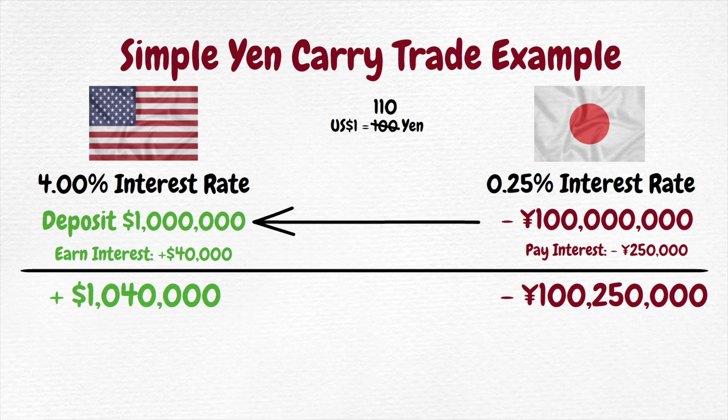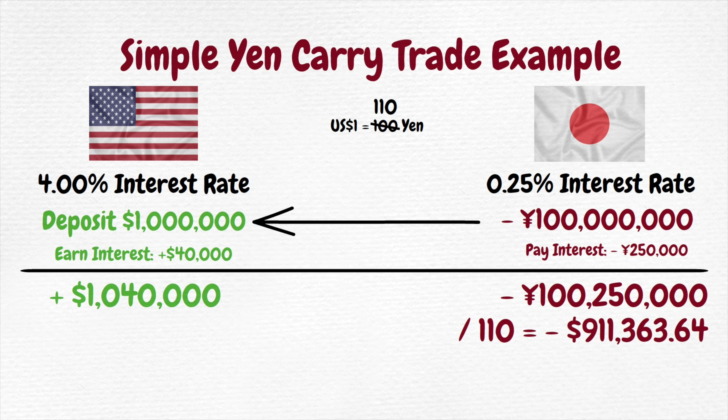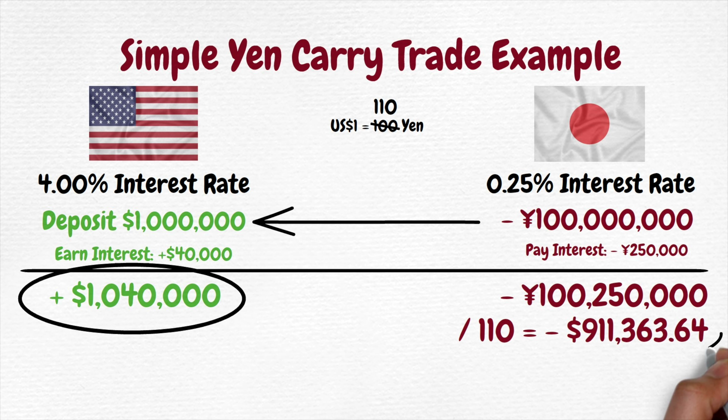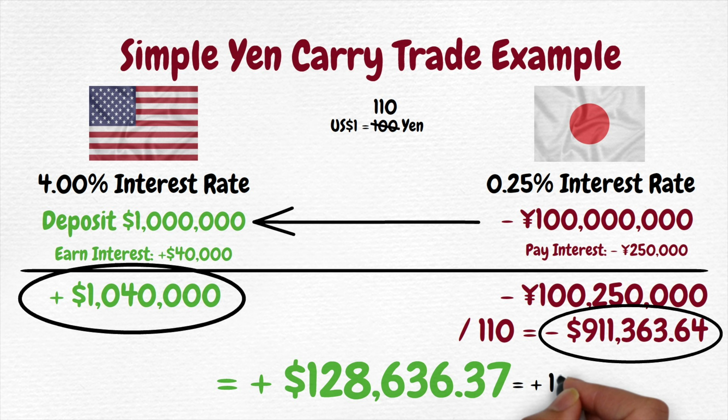At the new exchange rate of 110 yen per US dollar, we take 100,250,000 yen and divide that by 110 to get $911,363.64. So if we take what we have and subtract what we owe, we get $128,000 and change — a gain of 12.9%, which looks pretty damn impressive. So remember, it's these two ingredients together: the carry of the interest rate differential plus the move in the exchange rate based on a policy of trying to devalue the yen — that made the yen carry trade so profitable for so long that it became very famous.